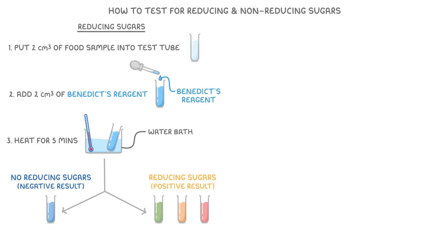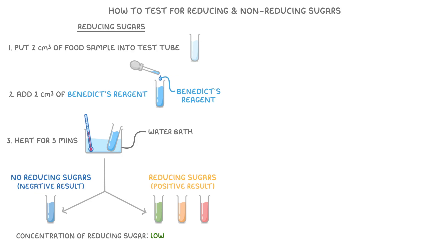The specific colour change tells us what concentration of reducing sugar is in the food sample. A green colour indicates a low concentration, an orange colour suggests a medium concentration, and a brick red colour shows a high concentration of reducing sugar.